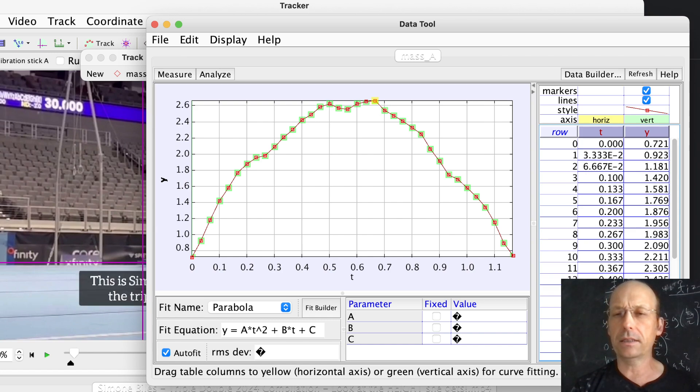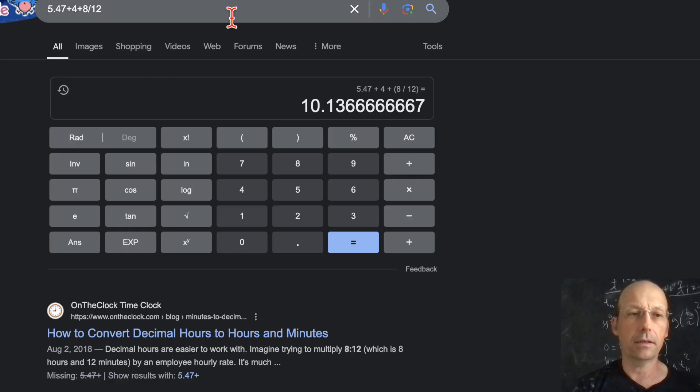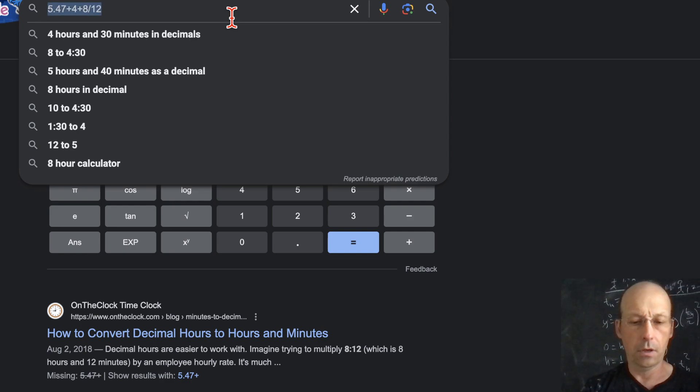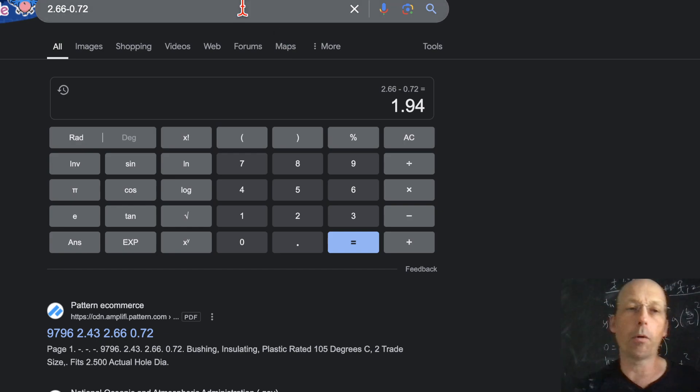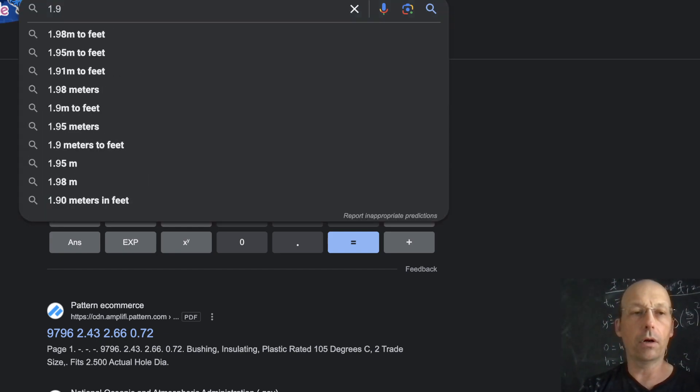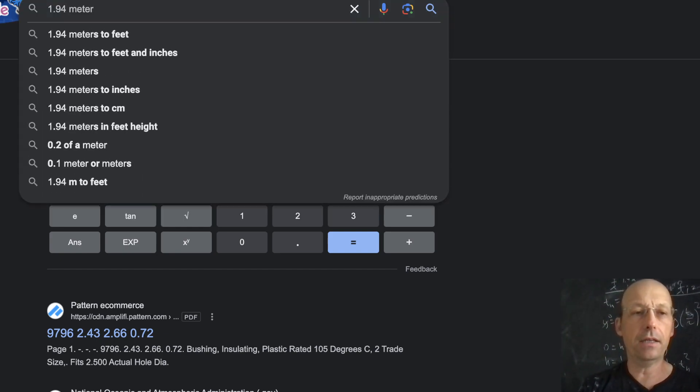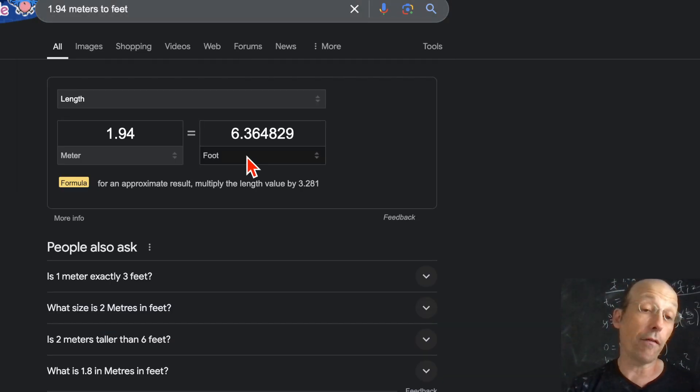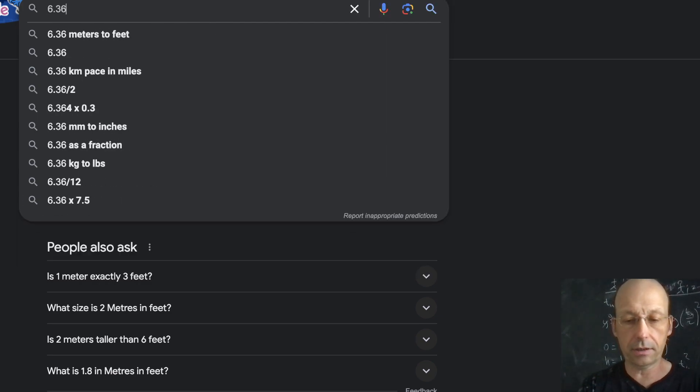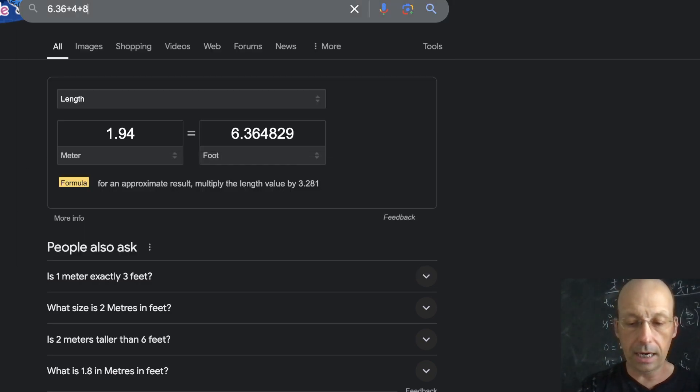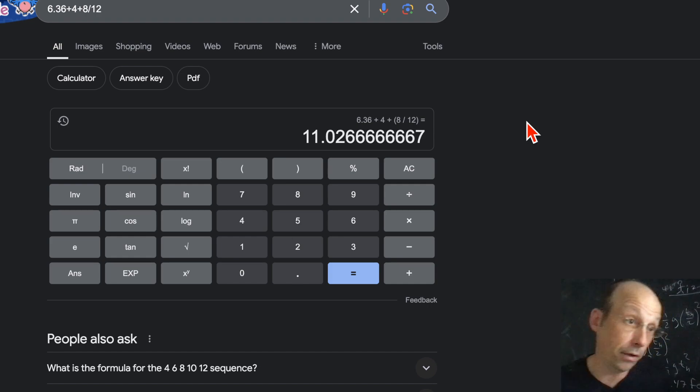So you see right here, she started at a height of 0.72 meters for the center mass. And it ended up at a highest point of, let's see. That one is 2.66. So 2.66 minus 0.72. That's 1.94 meters. 1.94 meters to feet. That one gives a little bit higher value. Remember, that's center of mass height. That is huge. 6.3 feet. And then if I add, let's do 6.36, 6.36 plus 4 plus 8 over 12. I get 11. So yeah, she jumped high.